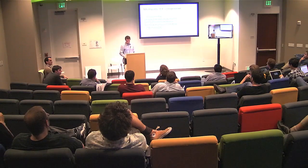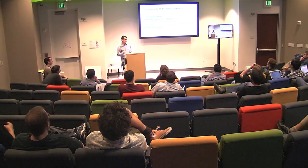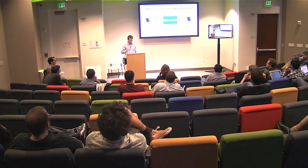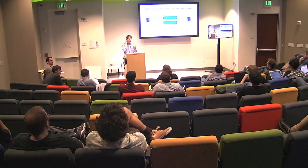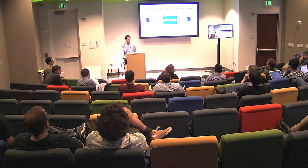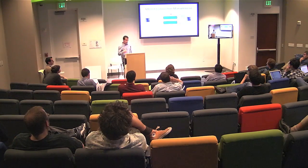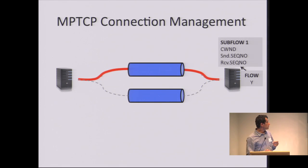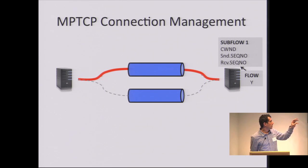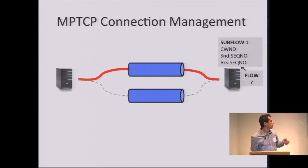These are the components of multipath TCP. I'll cover connection setup, sending data over multiple paths, congestion control, and some applications. MPTCP starts with a regular TCP handshake: you send a SYN but with a new MP_Capable option, and X is a connection identifier the client gives to this connection. If the server is multipath TCP enabled, it replies with MP_Capable and its own local connection identifier Y. Once the handshake completes, both client and server set up state, keeping the same variables as regular TCP — congestion window, sequence numbers, and so forth.